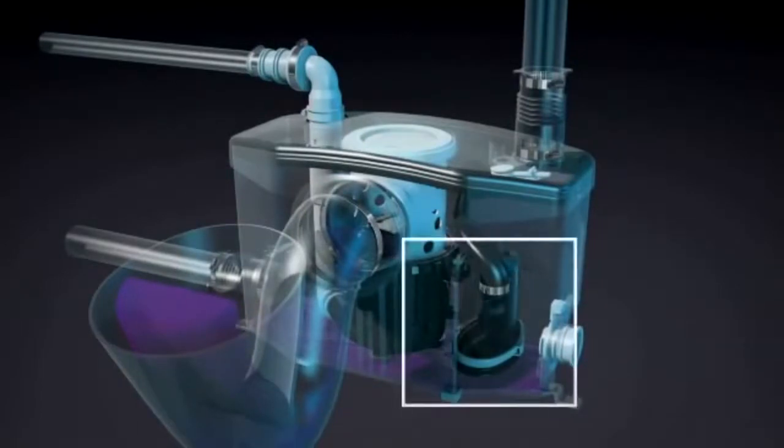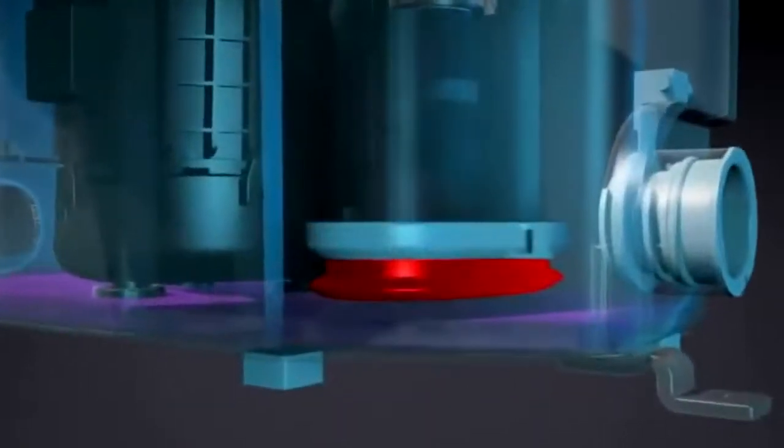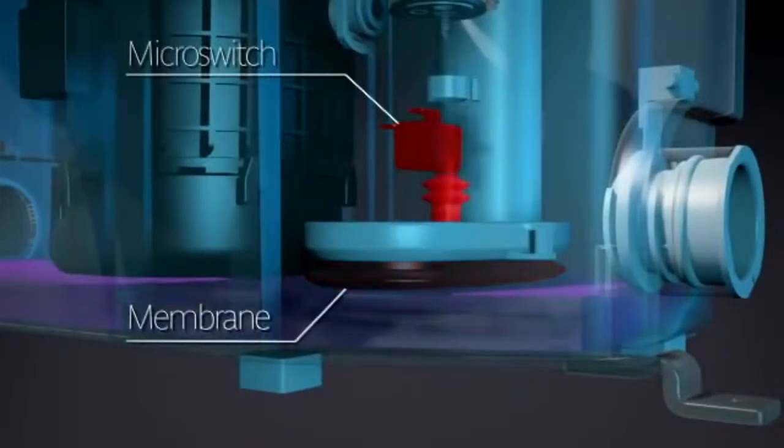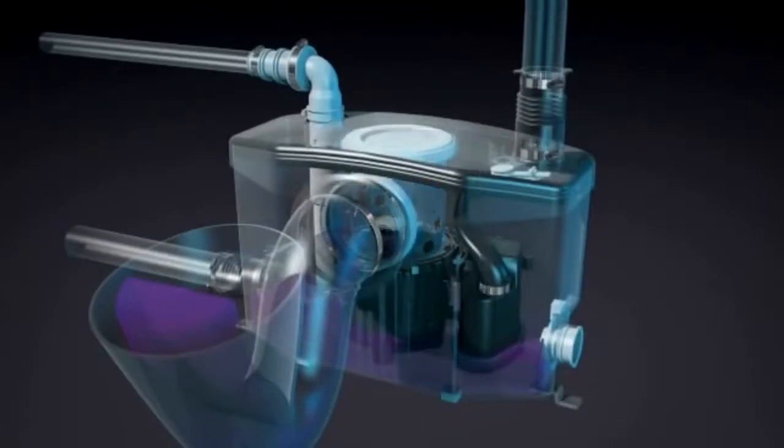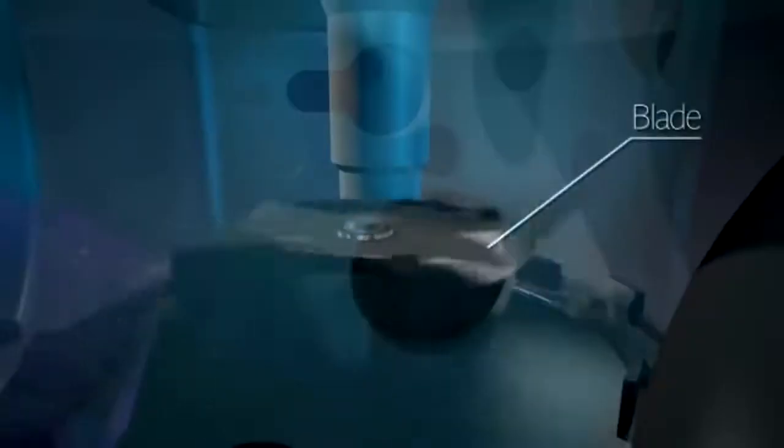Inside, the pressure sensing system consisting of a microswitch and a membrane detects pressure from the water level rising inside the unit. Once the water reaches the membrane, the pump turns on causing the blades driven by the motor to grind all the waste into tiny particles.